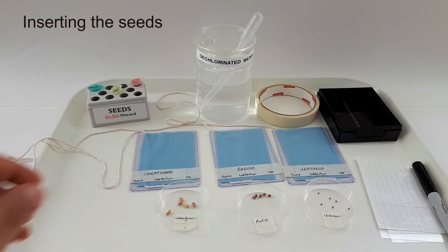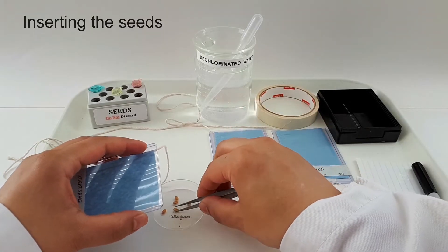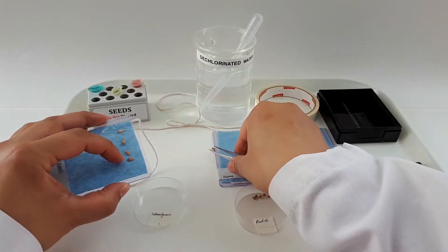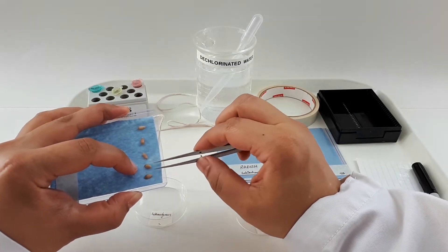Using forceps, place five to six seeds in each plant pocket. The seeds should be placed approximately one centimeter from the top of the plant pocket.